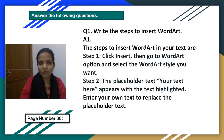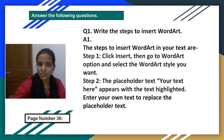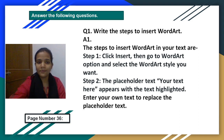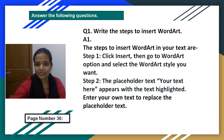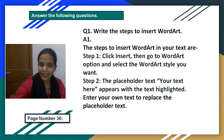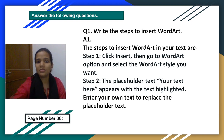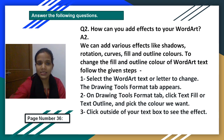I hope all of you have done your homework. Now please check your answers. Question number 1: Write the steps to insert Word Art. Step 1: Click Insert and then go to the Word Art option and select the Word Art style you want. Step 2: A placeholder text 'Your text here' appears highlighted — enter your own text to replace the placeholder. These are all practicals, so by doing them practically you will understand how to insert Word Art, as I have shown in my previous video.